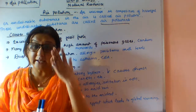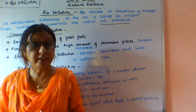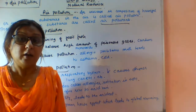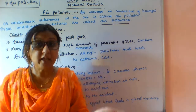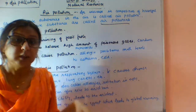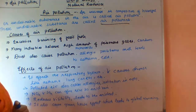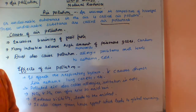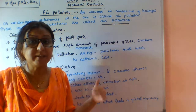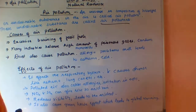Today we studied about rain — how rainfall occurs and the events involved. After that, I explained air pollution: what it means, what the causes of air pollution are, and what the effects of air pollution are. Thank you for today's class. Go through all these topics again and complete your notes as well. Thank you.